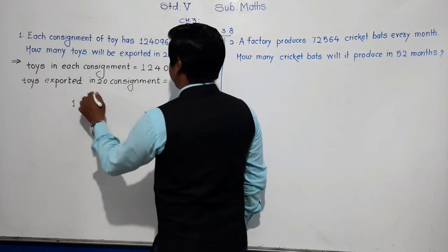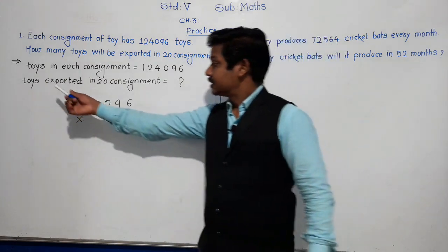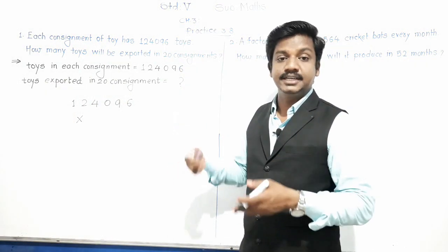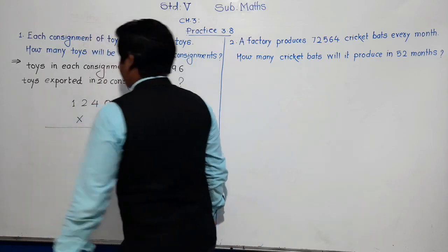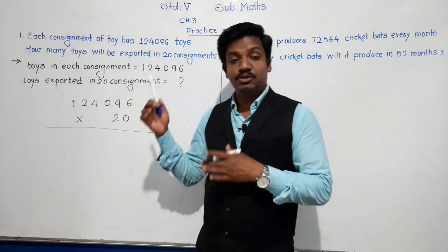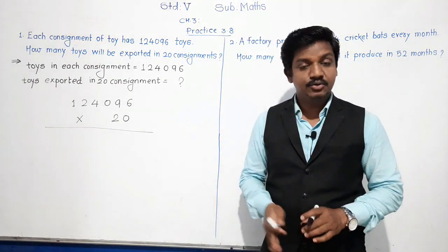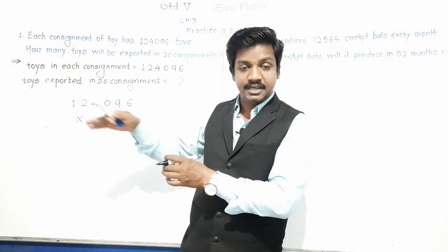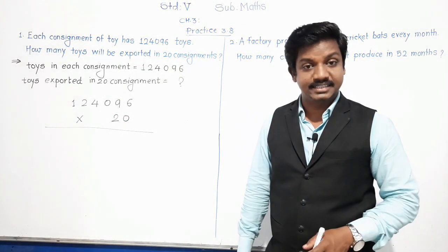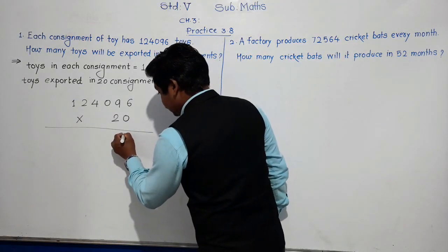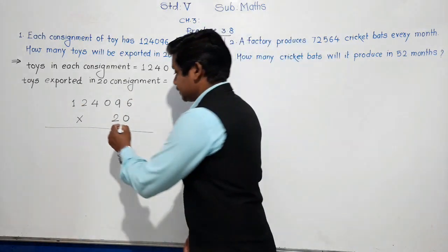We multiply 1,24,096 by 20. Since 20 is a multiple of 10 — there is a 0 at the end — we write the 0 down and multiply the number by 2. So: 2×6=12, write 2 carry 1; 2×9=18, 18+1=19, write 9 carry 1; 2×0=0, 0+1=1; 2×4=8; 2×2=4; 2×1=2.